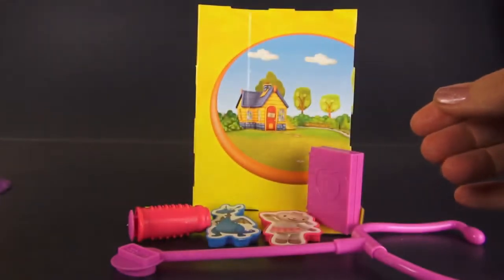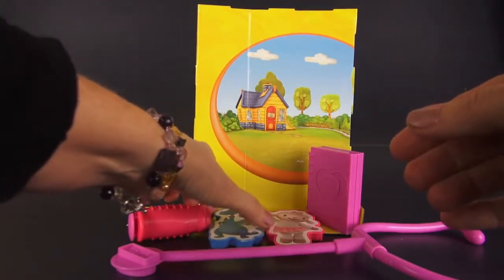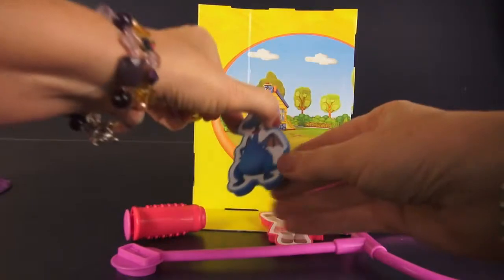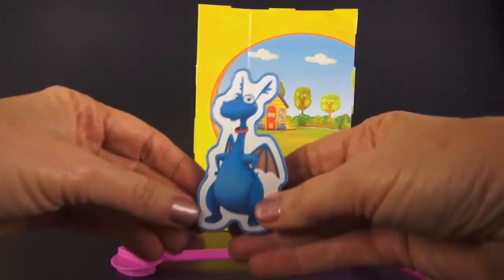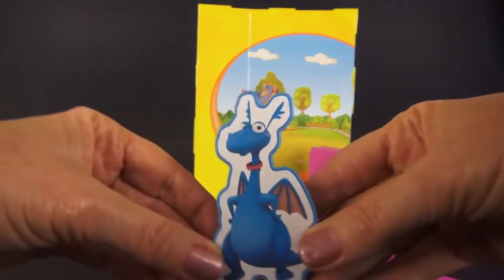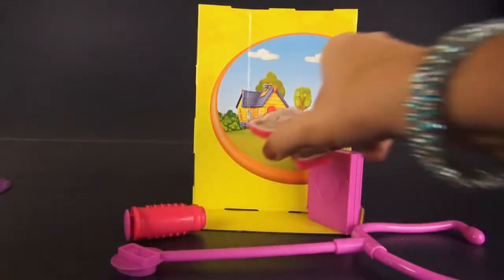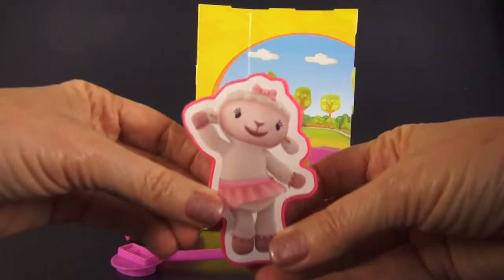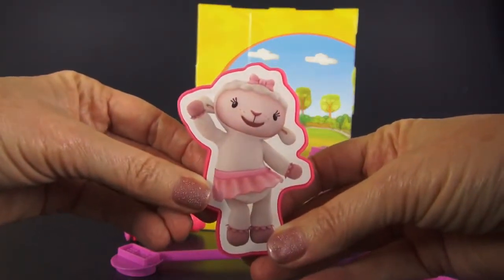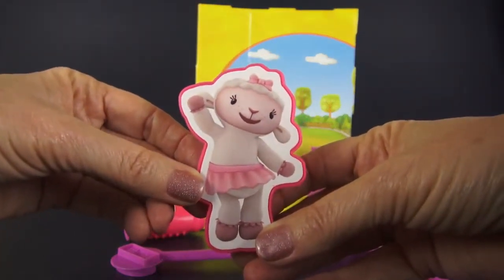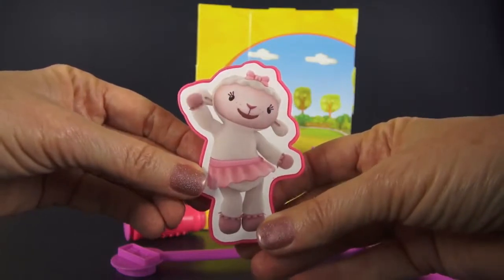And then we have her friend Stuffy the dragon. Hi, Stuffy. And then we have Lambie, who's also her toy and her friend and talks to her when Doc has her magic stethoscope on.